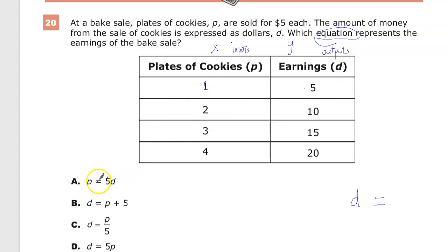This says 5 times d will give me whatever the value for p is. So that would say 5 times 5 gives me 1. We know that's not true. And if I did 5 times 10, it wouldn't give me 2, and 5 times 15, it wouldn't give me 3. So this one's out.